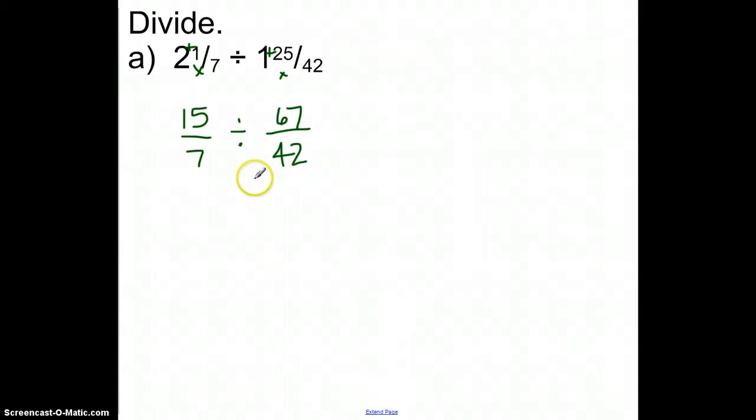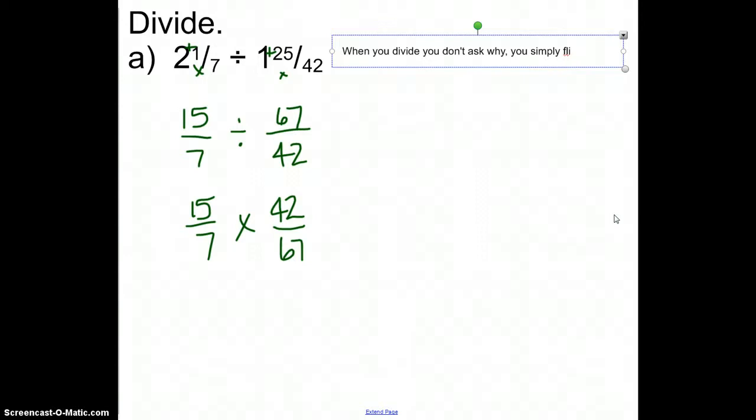Now this is the way that it works. I'm going to tell you a rhyme that my students have used before. When you divide, you don't ask why, you simply flip the second guy. If I was looking at these two, the second guy would be the one that comes after the division, and I simply flip it. So 42 would be over 67. When I flip this, I also flip the sign.